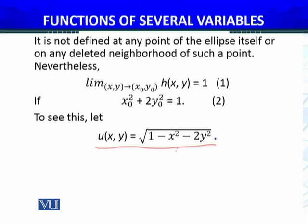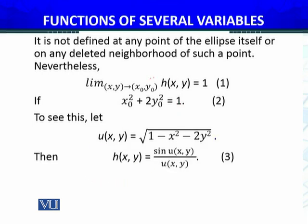To see this, let u(x,y) equal this one. Ab yeh function of two variables hai, iski bhi domain jo hai yeh ke boundary points pe yeh zero ho jayega. Lekin mera h(x,y) jo original function define kiya tha, usko main is shape mein, newly defined function u(x,y) is shape mein lekh sakta hun.